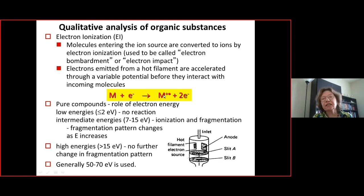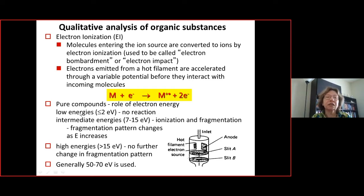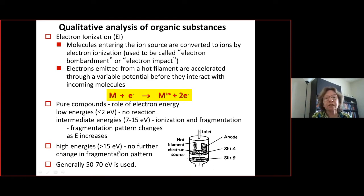This process is described by: M + e⁻ → M⁺• + 2e⁻. The analyte loses an electron, becoming a cation radical, denoted M⁺•. We can vary the electron energy; at 7–15 eV, ions begin to appear and fragment. Above a certain threshold, the fragmentation pattern stabilizes, providing a molecular fingerprint. Typically 50–70 eV was used for electron ionization.